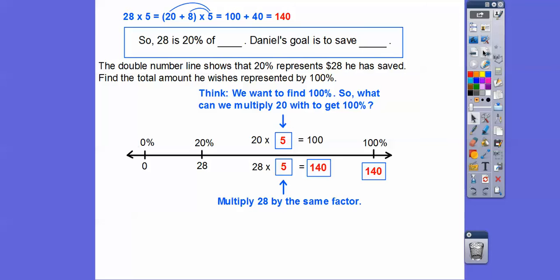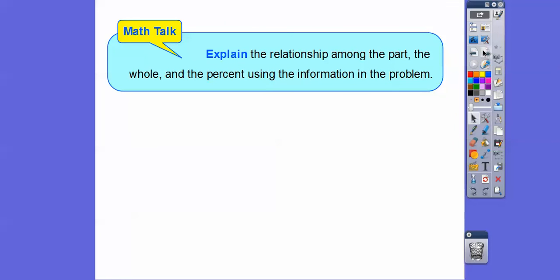So 28 is 20 percent of 140, and Daniel's goal is to save $140. Easy, huh? Hope so.